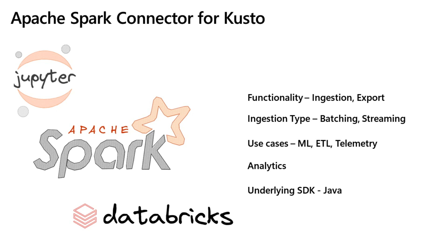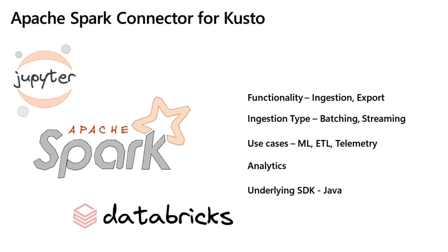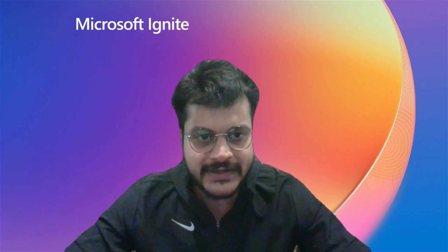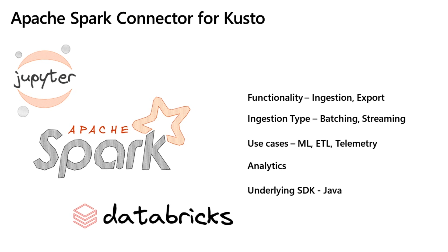The Spark Connector is an open-source project that can run on any Spark cluster. It implements data source and data sink for moving data to or from Spark clusters. Using the Apache Spark Connector, you can build fast and scalable applications targeting data-driven scenarios such as machine learning, ETL, and log analytics. With the connector, your database becomes a valid data store for standard Spark source and sink operations such as read, write, and write stream. You can write to KQLDB in either batch or streaming mode. Reading from KQLDB supports column pruning and predicate pushdown, which filters data in Kusto and reduces the volume of transferred data.